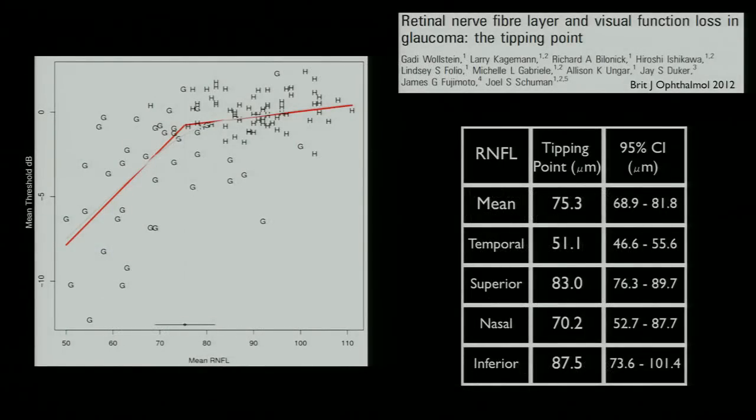We had published a paper, it was in print last year, it was e-published the year before, that we called the tipping point. And we called it the tipping point because there is a point at which the structure function relationship becomes very close, whereas prior to that point, the structure function relationship is quite poor. So in this range, where you have retinal nerve fiber layer that is either thicker or thinner, there's essentially no visual field loss. But when you cross this point, the tipping point, the relationship becomes very close, and each change in RNFL thickness, or each difference in RNFL thickness, yields a different level of functional loss.